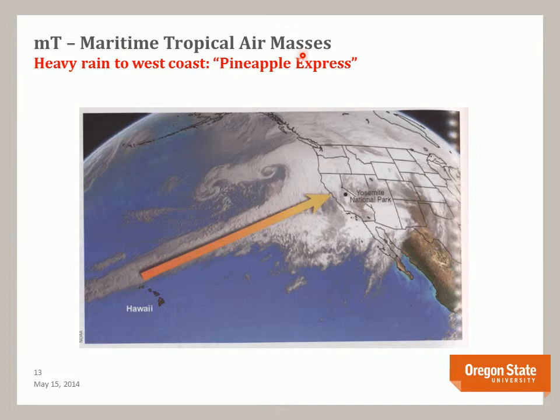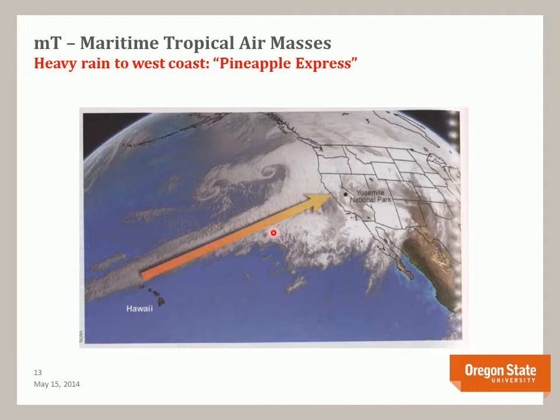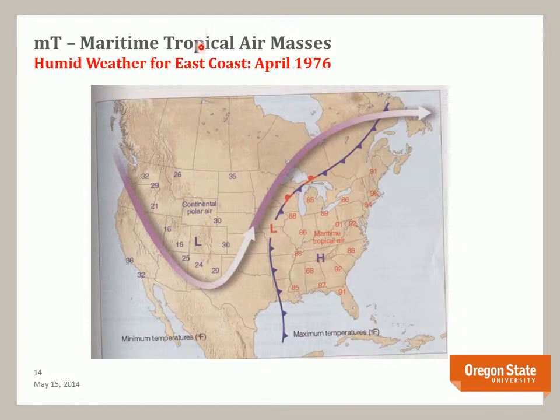First let's look at maritime tropical air masses. The Pineapple Express is a significant maritime tropical air mass that occasionally forms over the Pacific during the winter seasons, bringing heavy and drenching rain to California and the Pacific Northwest. This satellite image shows a Pineapple Express system developed in 1997 that brought significant rains which damaged Yosemite National Park. This map shows a maritime tropical air mass produced in the Gulf of Mexico that brought warm, humid air to most of the east coast, resulting in very high temperatures and humidity in April of 1976.